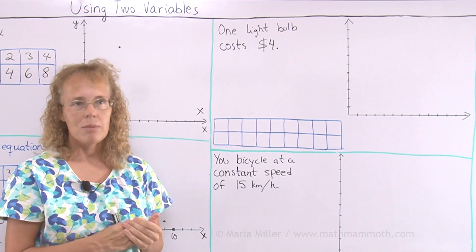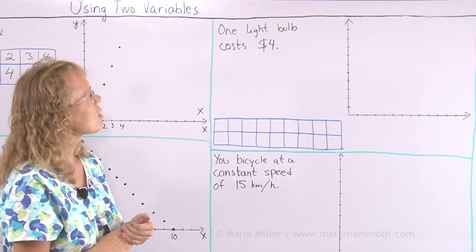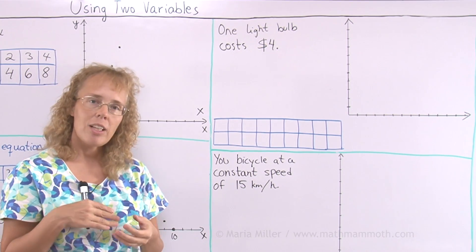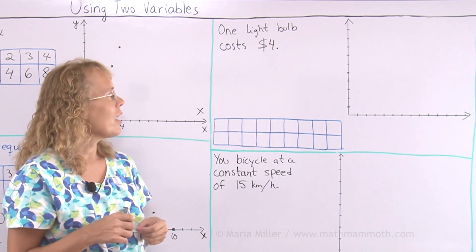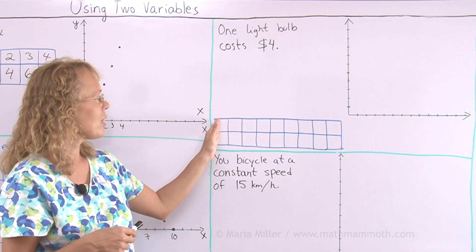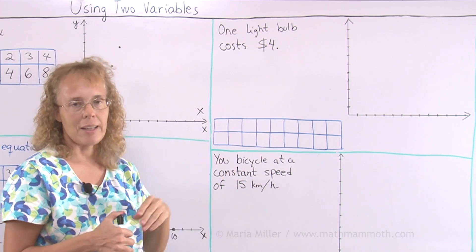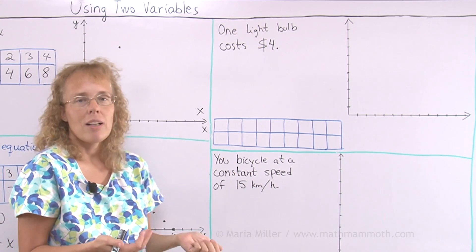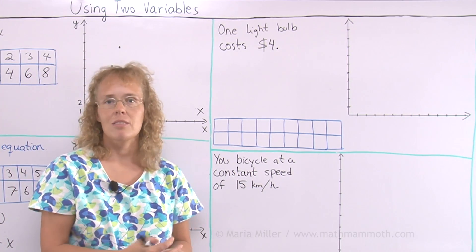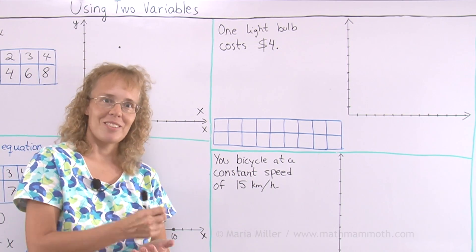Here we still have two variables. It just says one light bulb costs four dollars. This is a situation where I will dig out two variables, two unknowns from it. And then we will plot, we will find some ordered pairs and plot it again. What unknowns could there be if you're just told that one light bulb costs four dollars? You know, that's it, you know it.